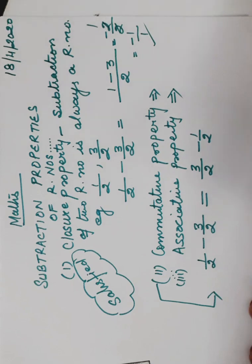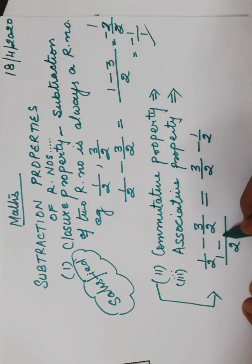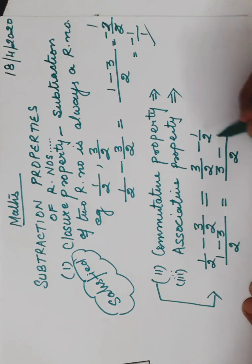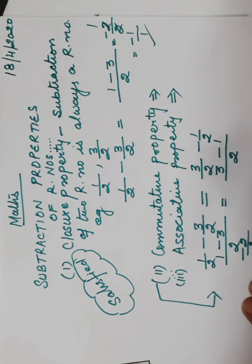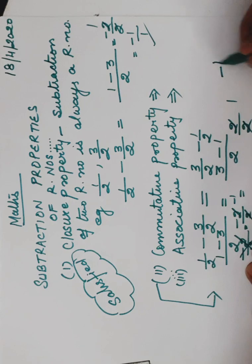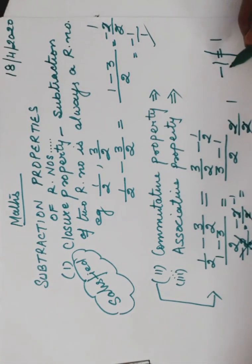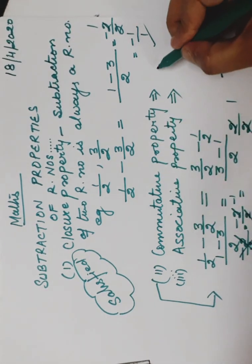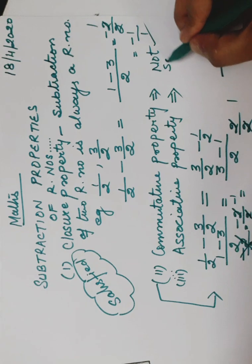We need to see: is 1/2 minus 3/2 equal to 3/2 minus 1/2? Taking LCM 2: (1 − 3)/2 = −2/2 = −1. Now reversing the order, taking LCM 2: (3 − 1)/2 = 2/2 = 1. So is −1 equal to 1? No. Since they are not equal, the commutative property is not satisfied. And when even two values give different results on changing order, associative property will also not be satisfied — so not satisfied.